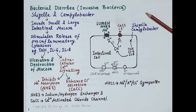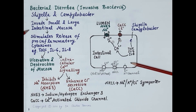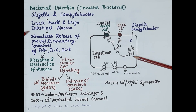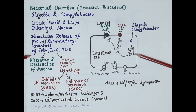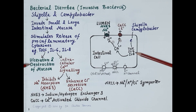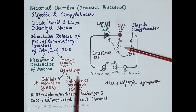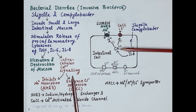Now let's look at how invasive bacteria produce diarrhea. Invasive bacteria like Shigella and Campylobacter invade small and large intestinal mucosal epithelial cells — they pass inside the intestinal cells. Inside the cells, these bacteria stimulate release of pro-inflammatory cytokines like tumor necrosis factor, interleukin-6, and interleukin-8. These pro-inflammatory cytokines produce ulceration and destruction of intestinal mucosal epithelium.